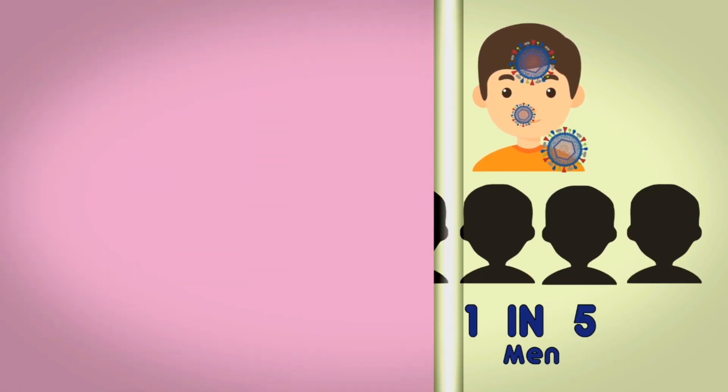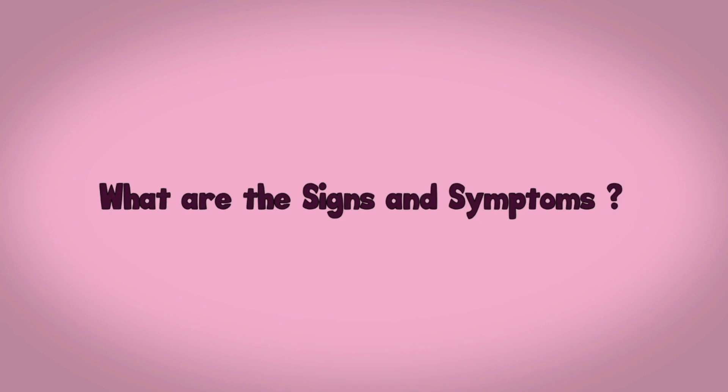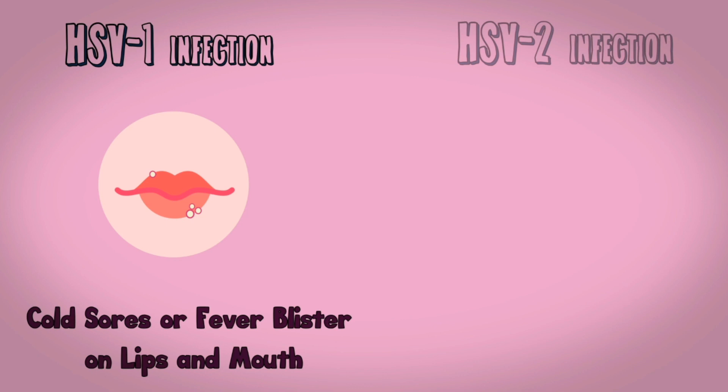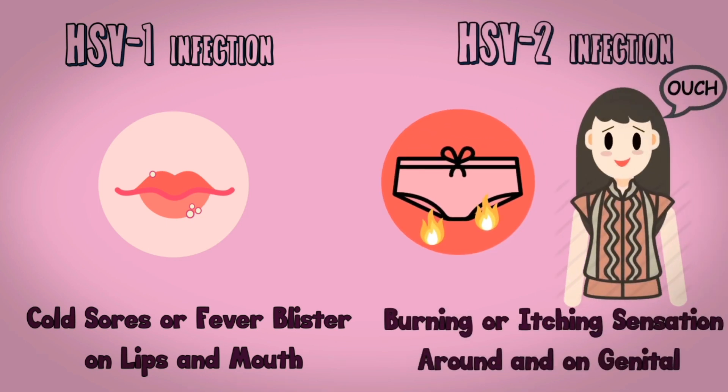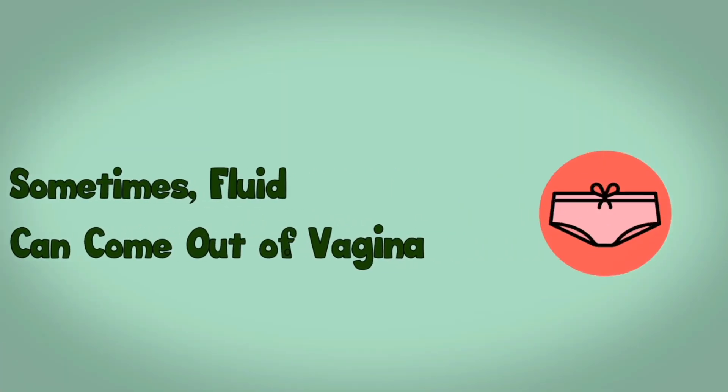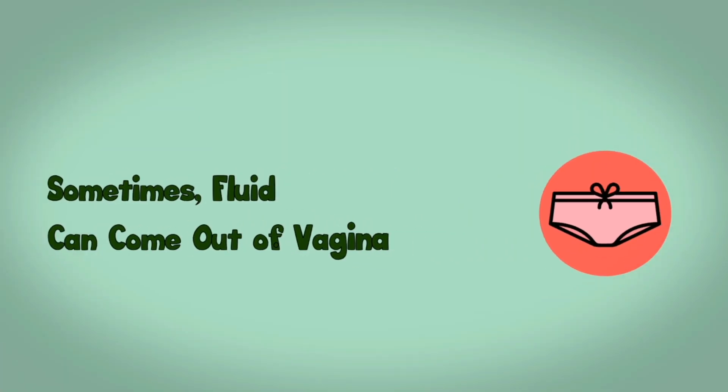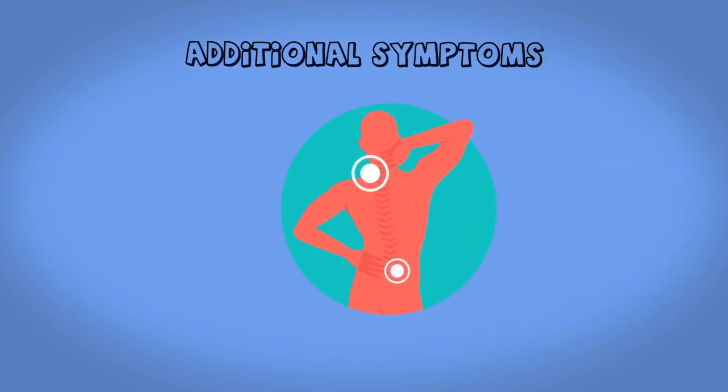What are the signs and symptoms? Symptoms are commonly known as cold sores or fever blisters on lips and mouth for type 1, and burning or itching sensation around and on genitals for type 2. Sometimes fluid can come out of vagina and genitals might hurt while urinating. Additional symptoms could be low back pain, flu-like symptoms like fatigue or fever, and swollen lymph nodes.